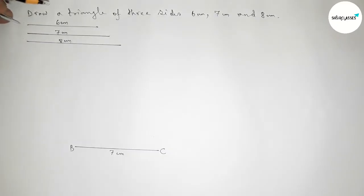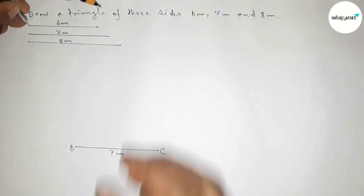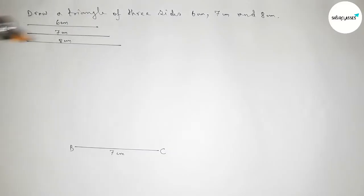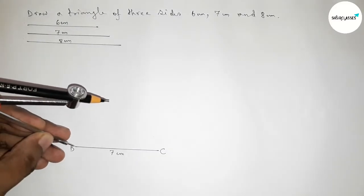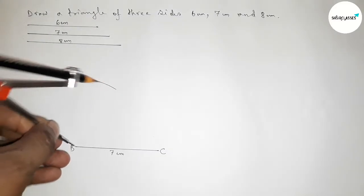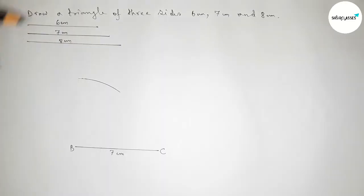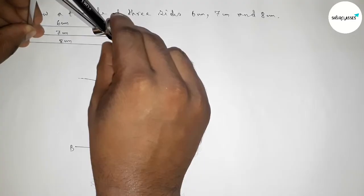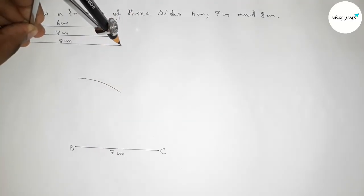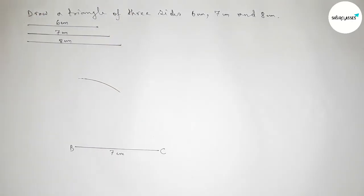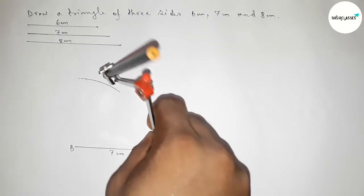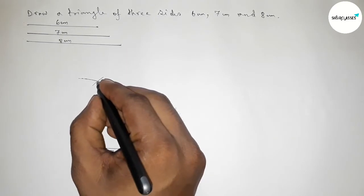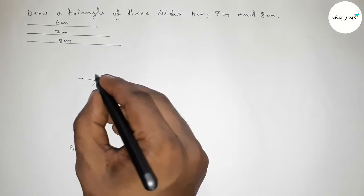Taking the length 6 centimeter by using the compass and putting the compass on point B, drawing an arc. Now taking the length 8 centimeter by using the compass and putting the compass on point C and cutting here. Both curves intersect at a point.